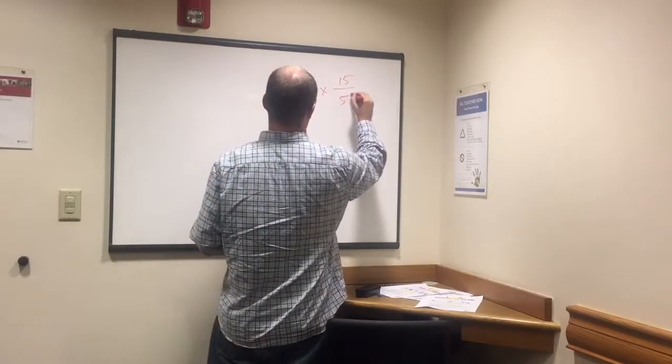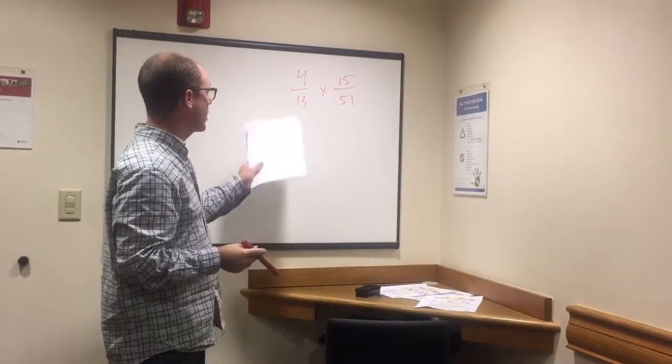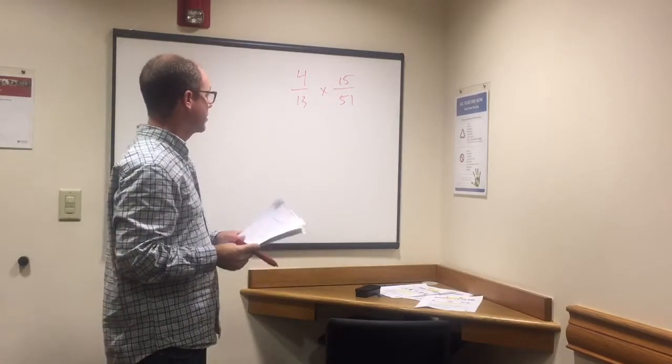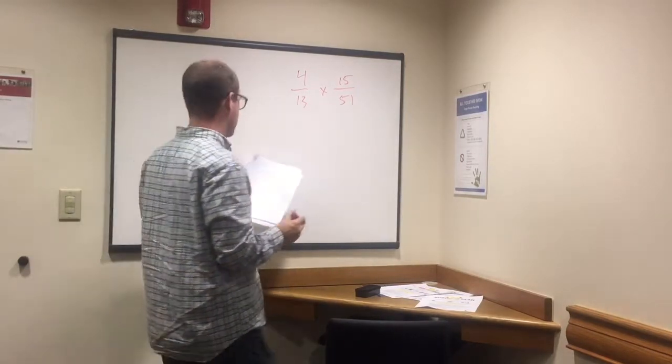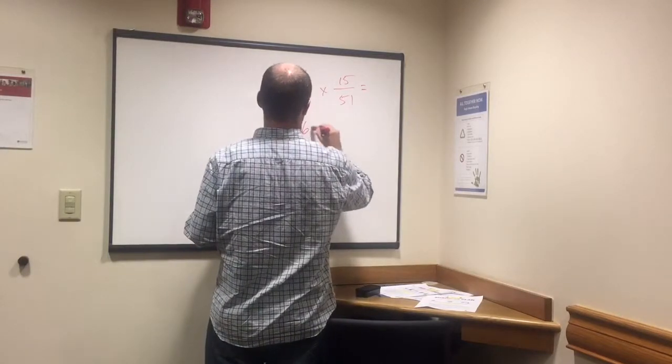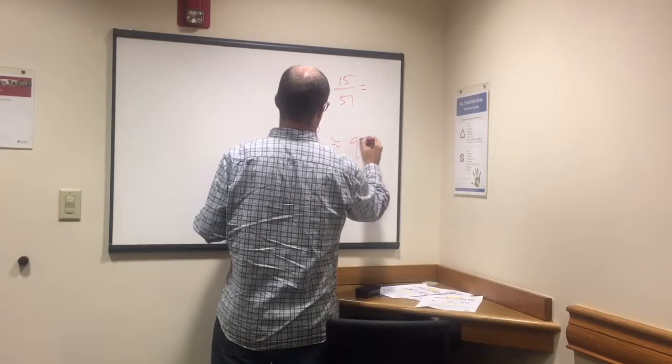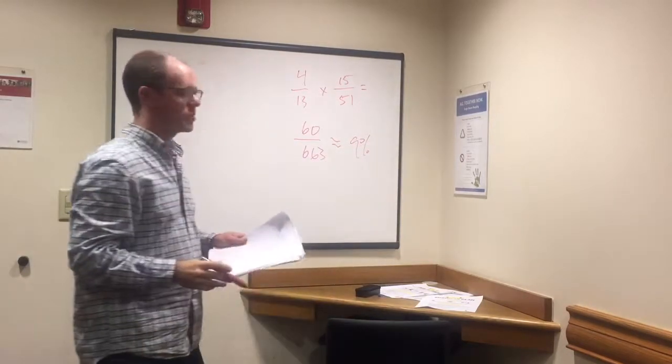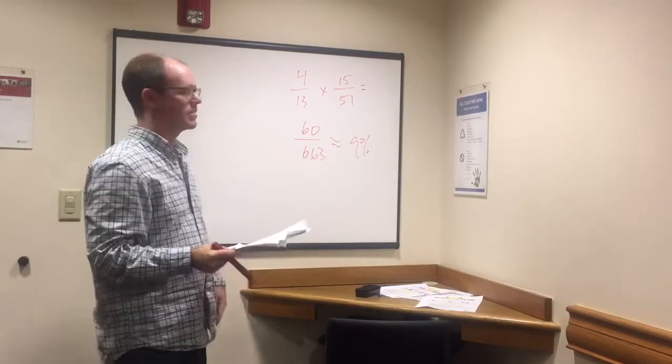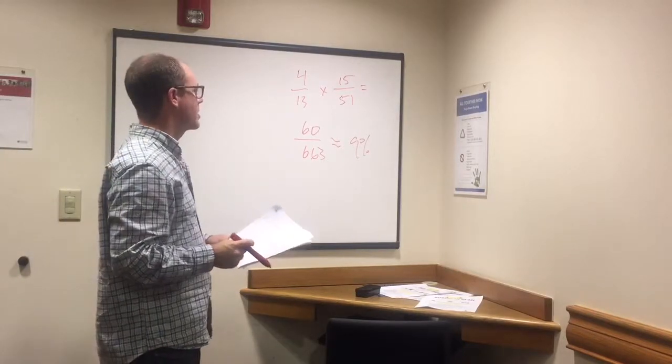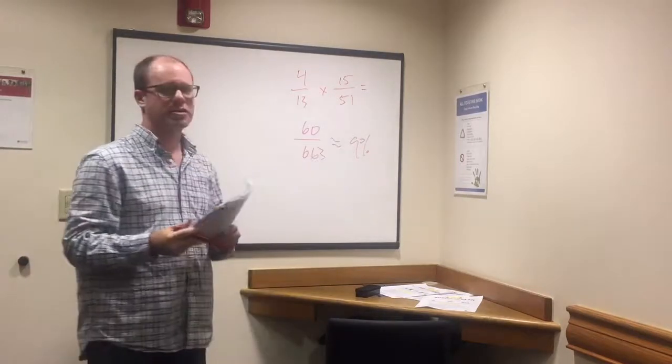And there are now only 51 cards in the deck. And so I'm going to multiply these two numbers together. So unfortunately, it doesn't work out for a nice clean math. We can't cross cancel or anything like that. So that number is 60 over 663, which is approximately 9%.